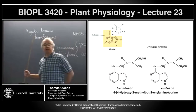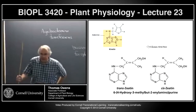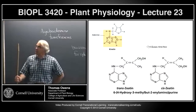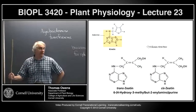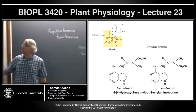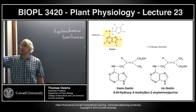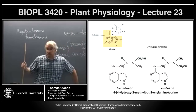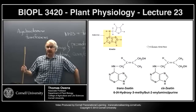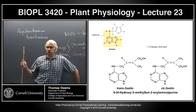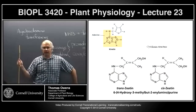When agrobacterium infects a plant, the Ti plasmid is transferred into the plant cell, and a small section called the T-DNA is transferred into the nucleus and into one of the chromosomes of the plant DNA. The insertion site is totally random — it can go in the middle of nowhere or right in the middle of a critical gene. If it disrupts a critical gene, that won't be a successful infection.